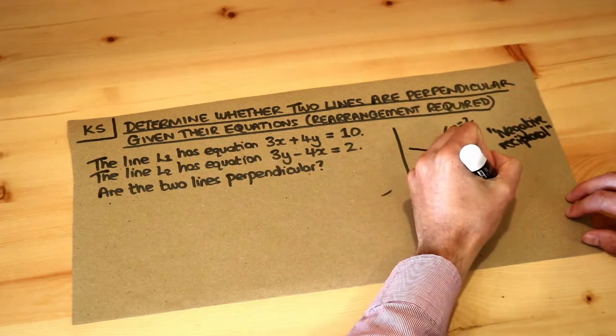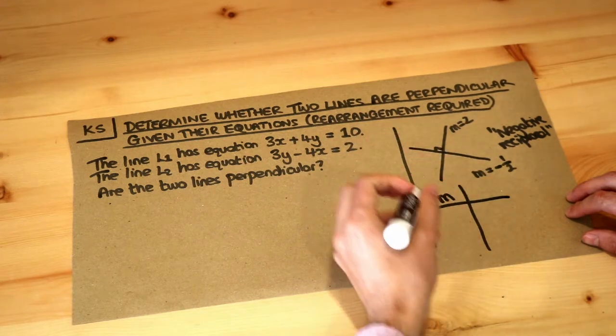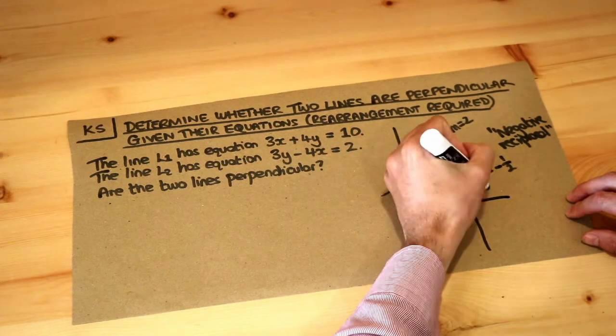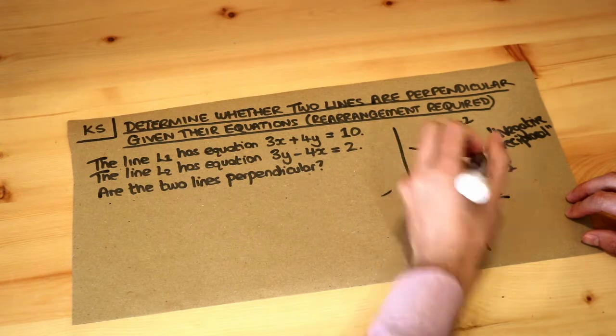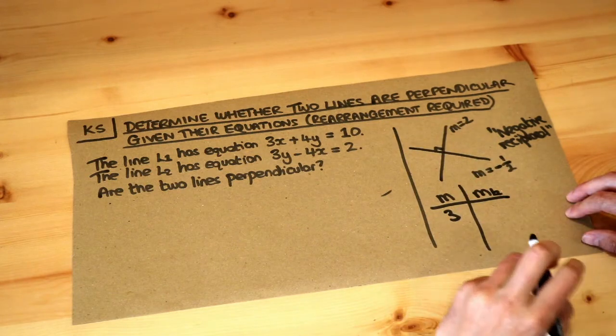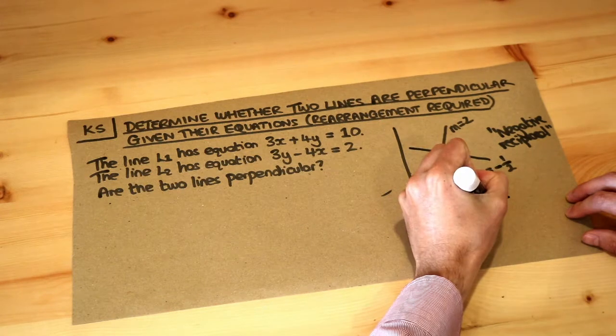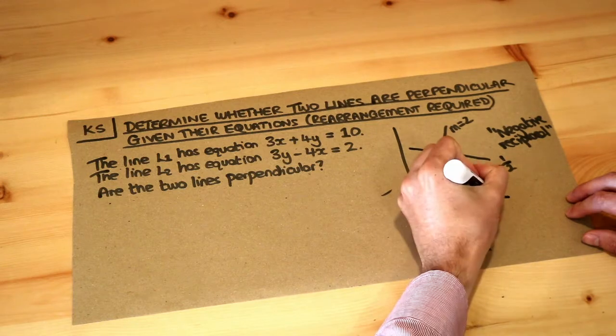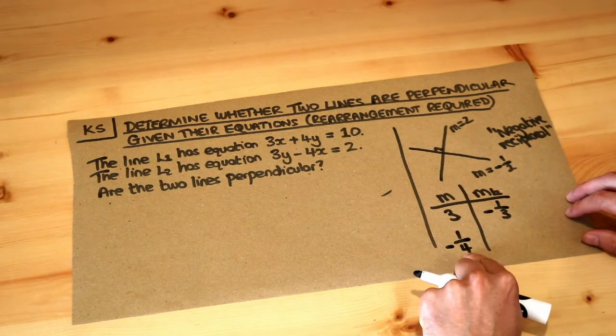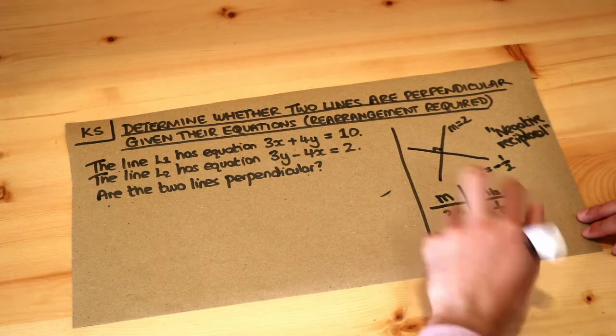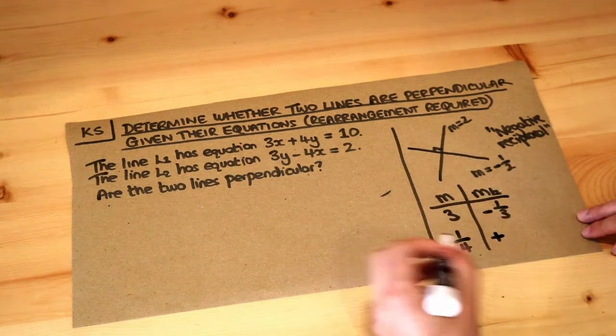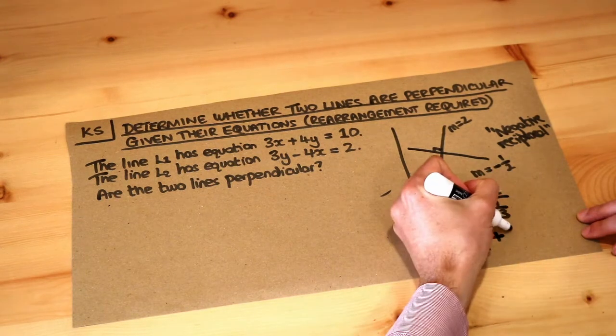Just some examples: if the gradient of one line was 3, then the gradient of the perpendicular line—I'm just going to use that symbol to mean perpendicular—you do negative that and you do 1 over it, and it becomes -1/3. And if the gradient was -1/4, then the minus becomes positive, so you negate it, and then you do 1 over 1/4, which would become 4.